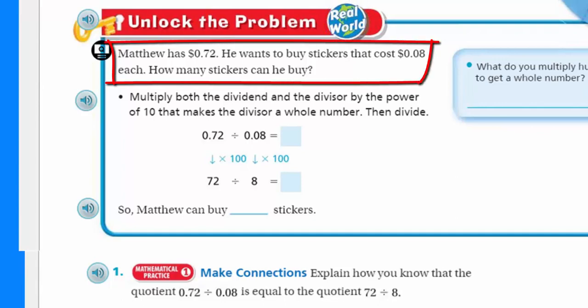We can keep doing that again. So this important concept I guess they thought was so important, they put it before unlock the problem. That's right, my friends. Yes, it's real world, baby. Real world problem here. We have Matthew has, looks like 72 cents. He's rich. He wants to buy stickers that cost 8 cents each. How many stickers can he buy?